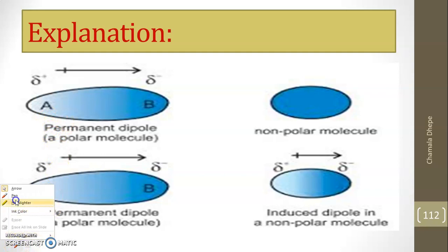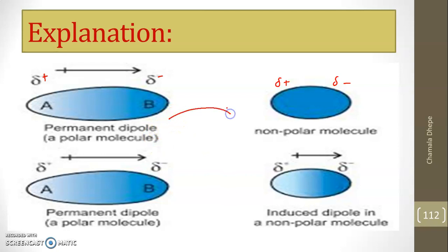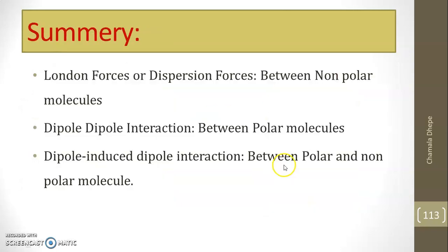In dipole-induced dipole interaction, the first molecule is a polar dipole with fractional positive and fractional negative. When it approaches the non-polar molecule, the symmetrical electron distribution in the non-polar molecule gets disturbed, causing it to become fractional positive on one side and fractional negative on the other. The polar molecule induces a dipole in the non-polar molecule — generating dipoles between them. That is why it is called dipole-induced dipole interaction.